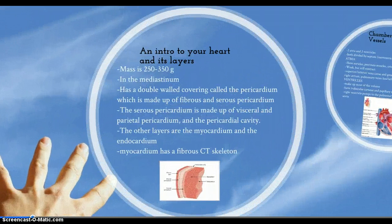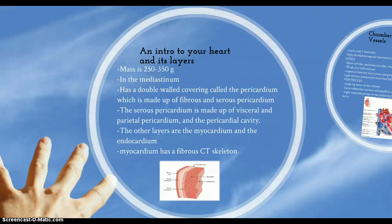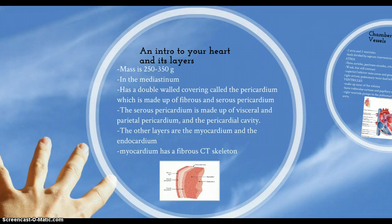Your heart has a mass of 250 to 350 grams, and it's in the mediastinum, which is basically the central cavity of your thorax. It has a double-walled covering called the pericardium, made up of the fibrous pericardium and the serous pericardium. The serous pericardium can be divided into the visceral and parietal pericardium, and in between them is the pericardial cavity, which contains serous fluid that allows your heart to pump in a friction-free environment.